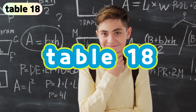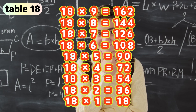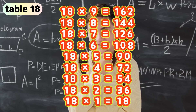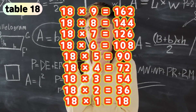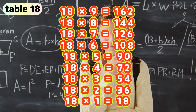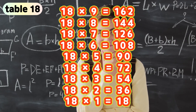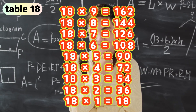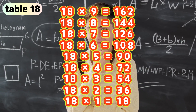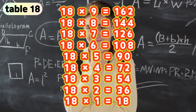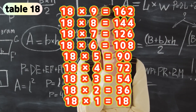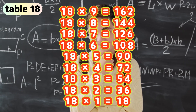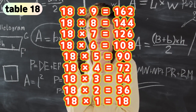Table 18. 18 times 9 is 162. 18 times 8 is 144. 18 times 7 is 126. 18 times 6 is 108. 18 times 5 is 90. 18 times 4 is 72. 18 times 3 is 54. 18 times 2 is 36. 18 times 1 is 18.